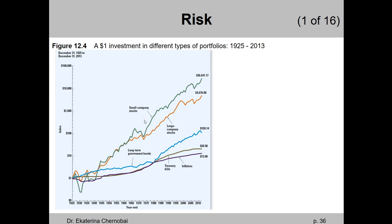On this figure we have several lines going up. Imagine your great-great-great-great grandfather or some distant relative invested $1 in 1925, and that relative had three friends — so four of them each invested $1. One bought shares of stock of small companies — that's the green line — increasing in value over time. The second person invested $1 into shares of large company stocks. That's the orange line, a little bit below the green one.